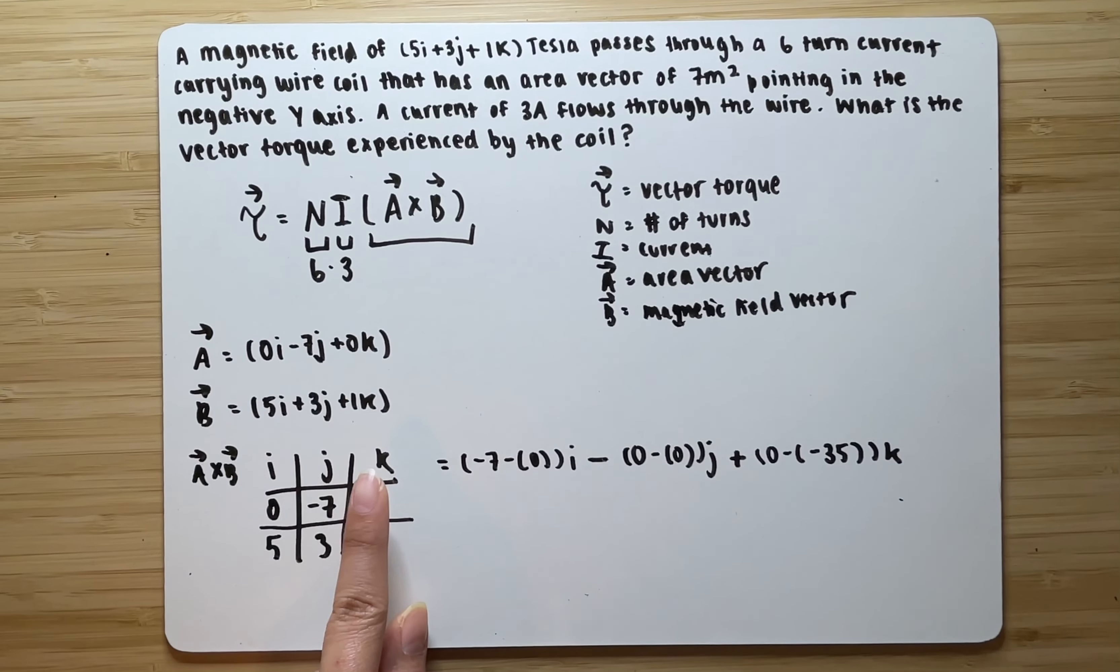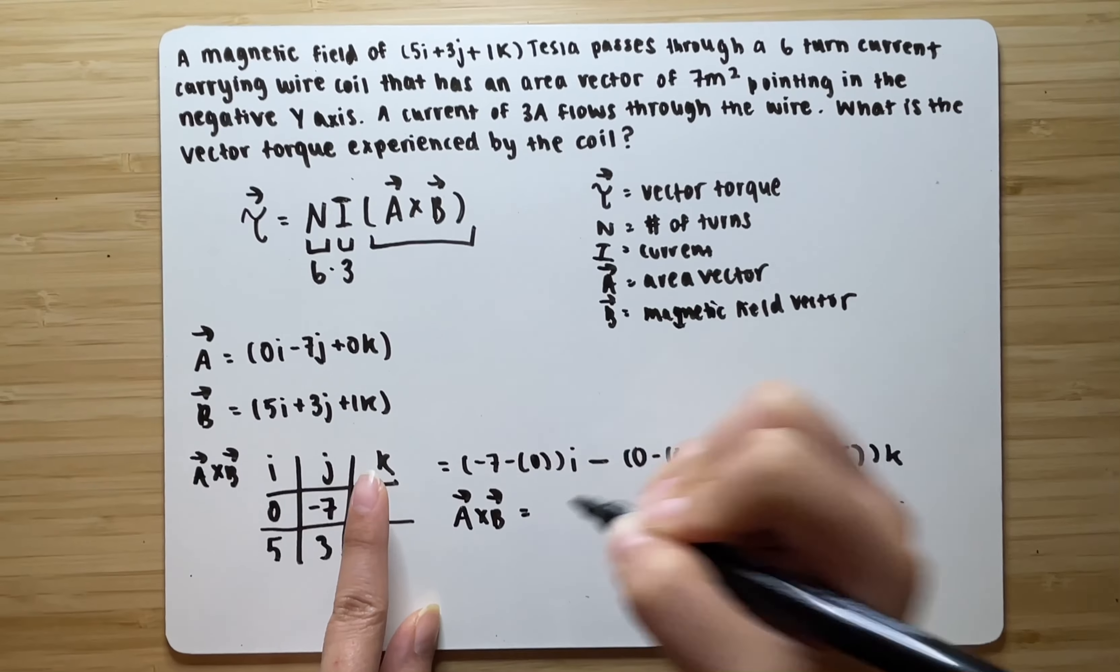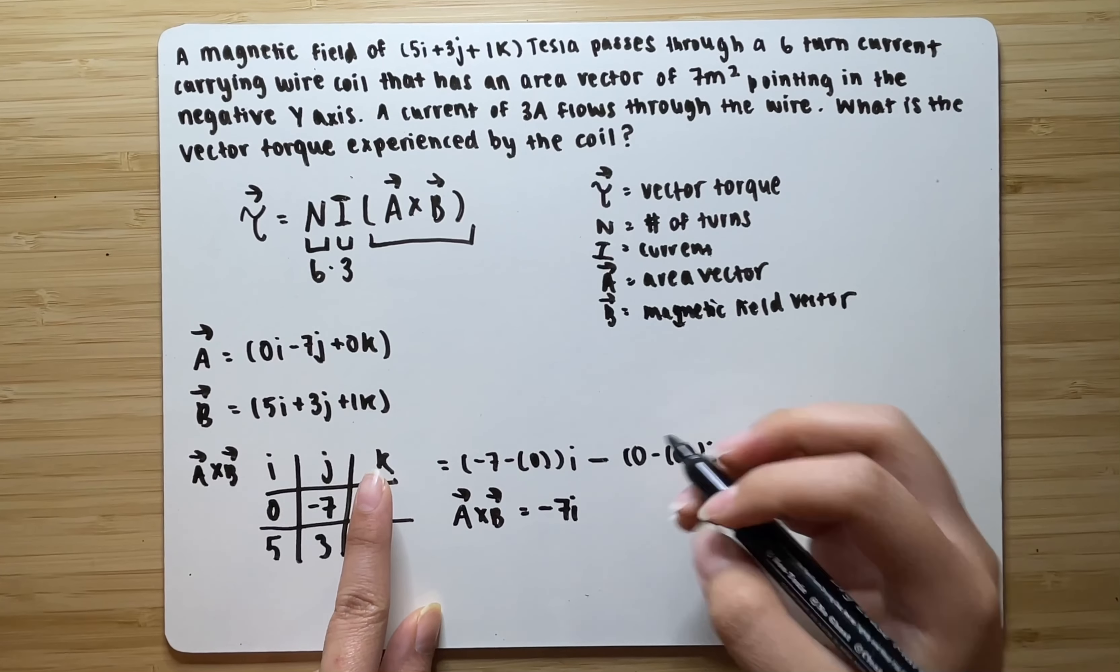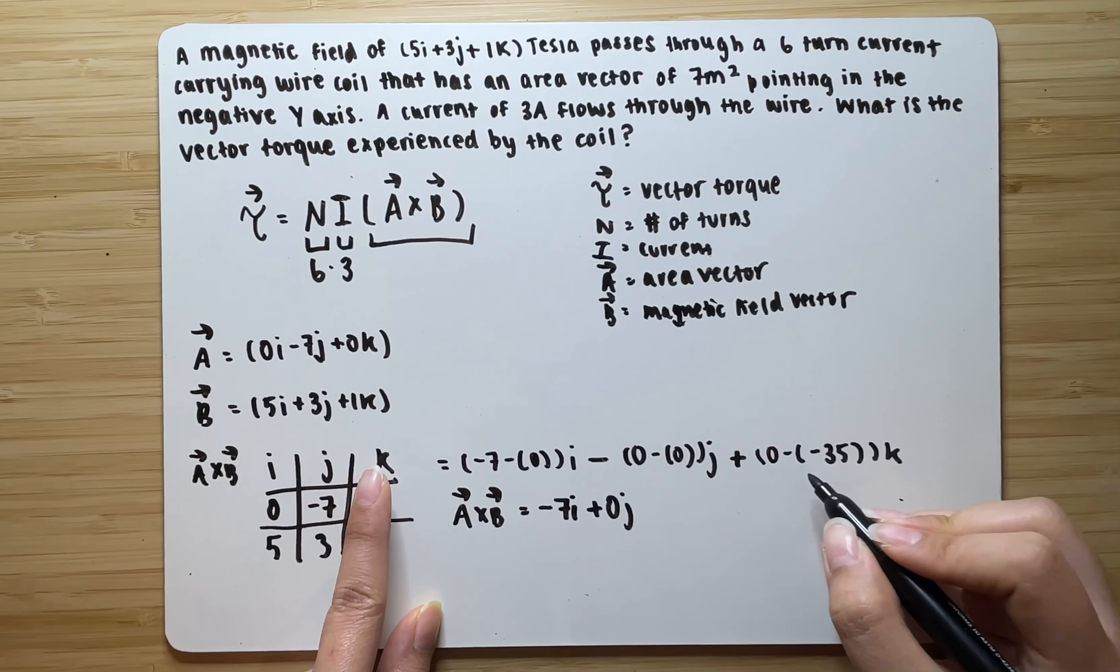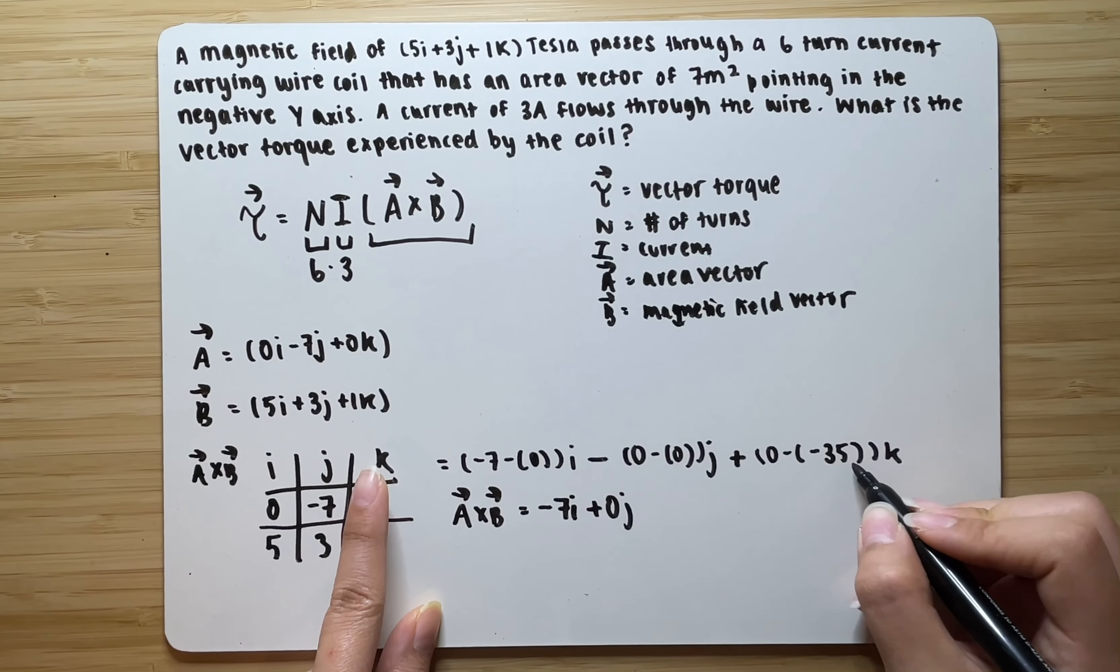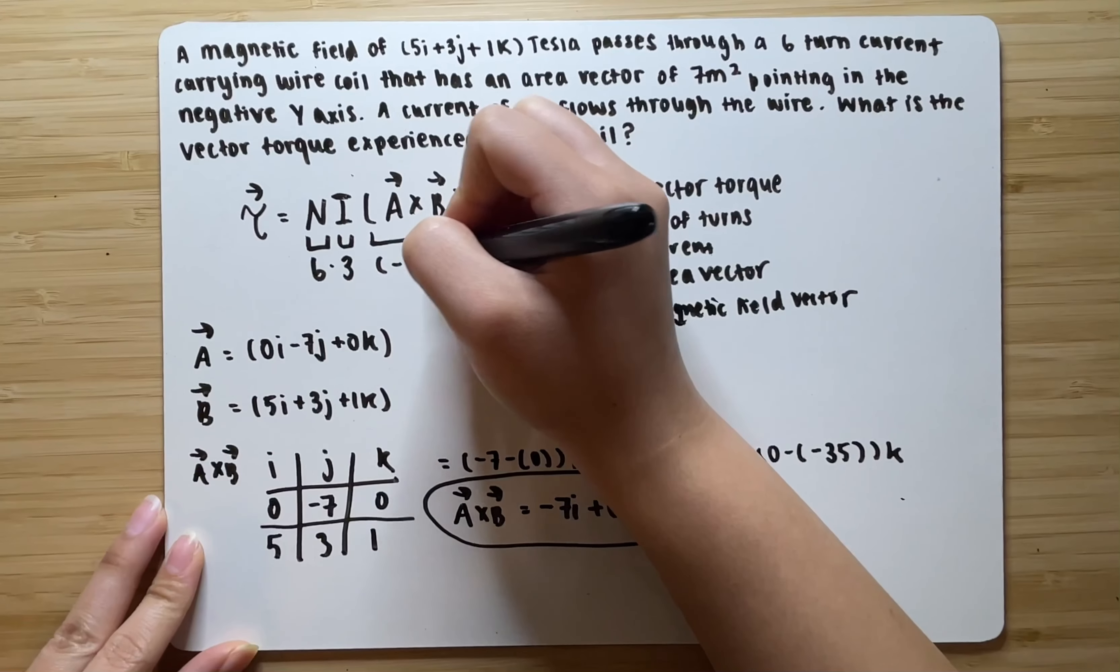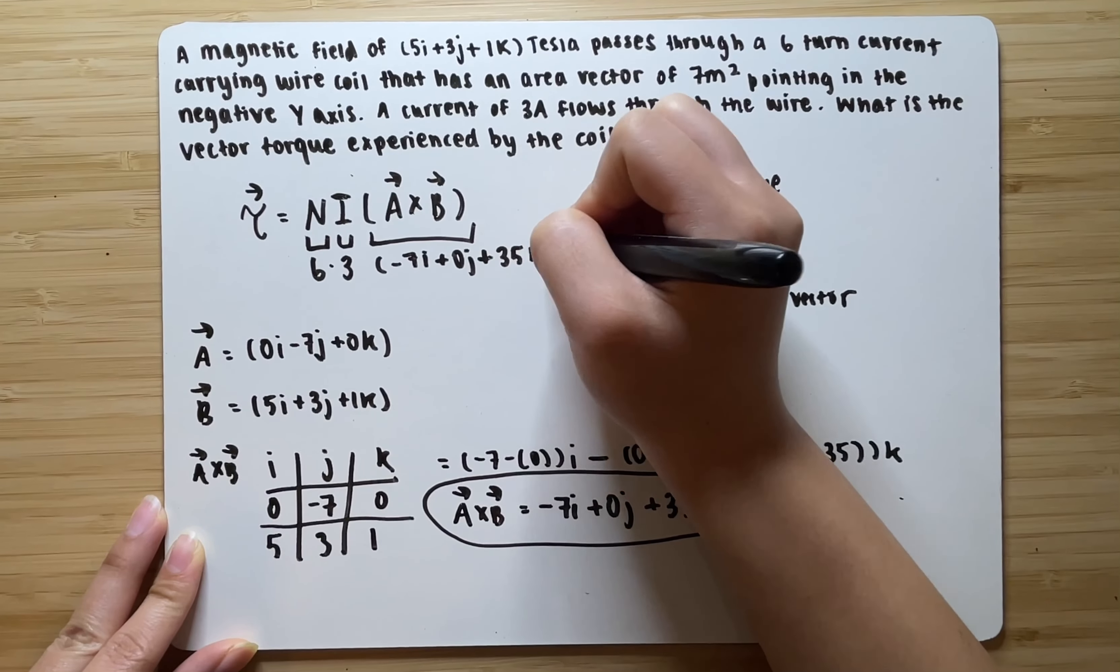Once you have that, you want to simplify or clean it up a little. So, negative 7 minus 0 is negative 7 i. 0 minus 0 is 0, so same thing as adding a 0 j. Plus 0 minus negative 35. A negative and a negative makes a positive. So, it's going to be the same thing as 0 plus 35, which will give us 35k. So, this is going to be our cross-product. So, we could write it here that we have a negative 7i plus 0j plus 35k.